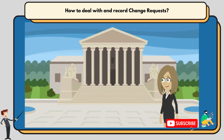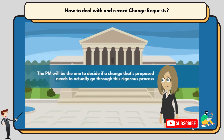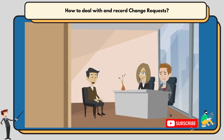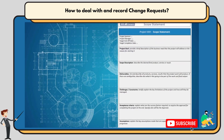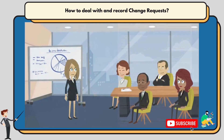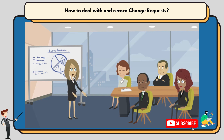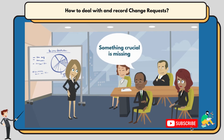It is worth noting that the project manager will be the one to decide if a proposed change needs to actually go through this rigorous process. For example, a team member requesting a couple of days off will not cost additional resources and will be covered by the buffer, so it doesn't require a lengthy process at all. Remember that the scope statement is a project manager's shield. If a stakeholder challenges the project manager, the project manager can take out their detailed scope statement and counter the challenge. However, if the stakeholder has a point and something crucial is missing, then the process is likely to be initiated.